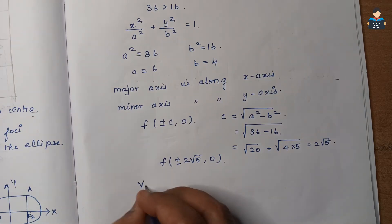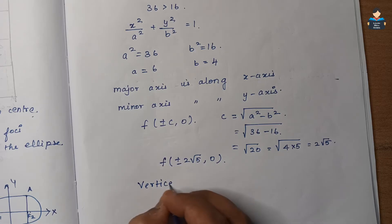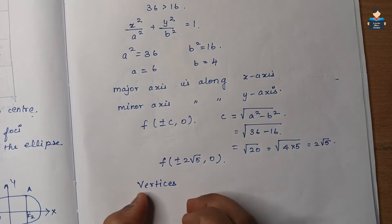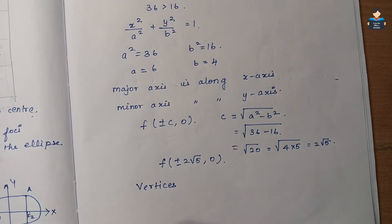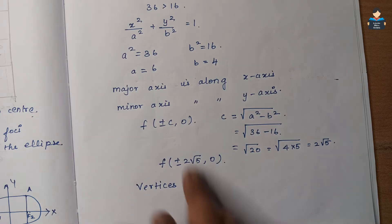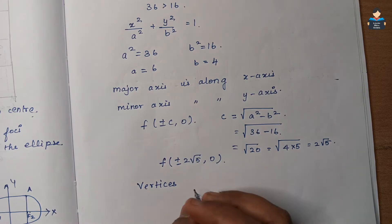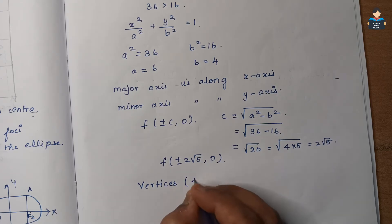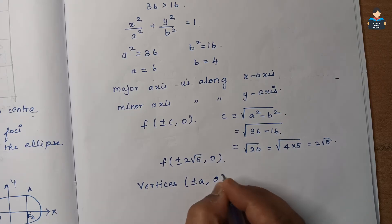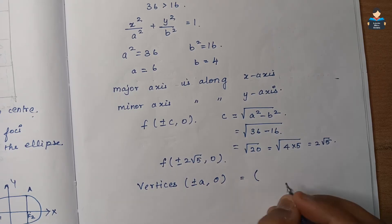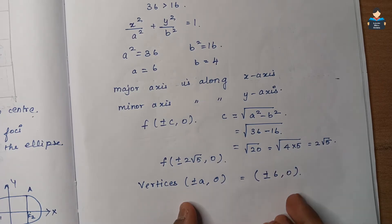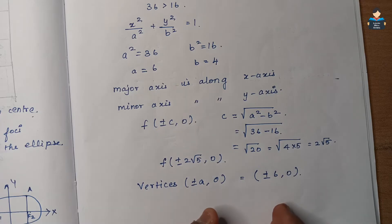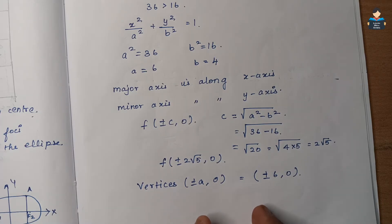Next, the vertices are at (±a, 0) = (±6, 0).